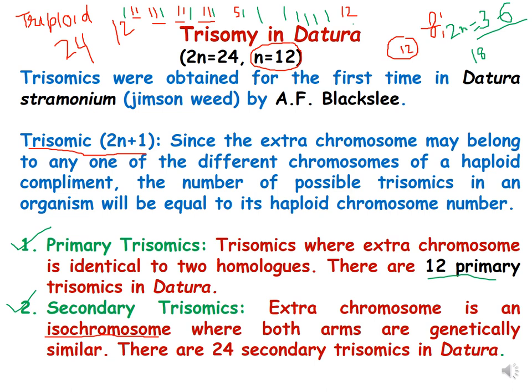Since the extra chromosome may belong to any one of the different chromosomes of a haploid complement, the number of possible trisomics in an organism will be equal to its haploid chromosome number. Trisomics are represented by 2n plus 1, where plus 1 represents the extra chromosome, which can belong to any of the homologous chromosomes. The chromosome complement of Datura has 2 sets, with a gametic number of 12, and these 12 chromosomes are present in a bivalent condition in somatic cells.